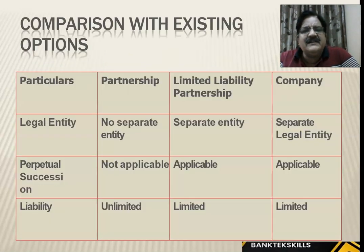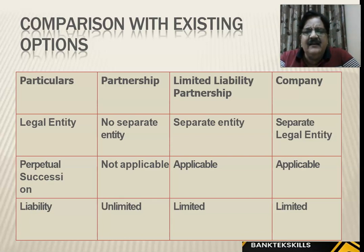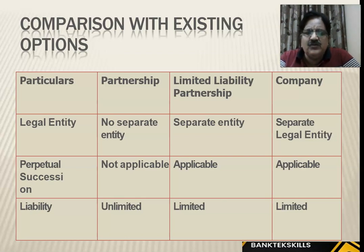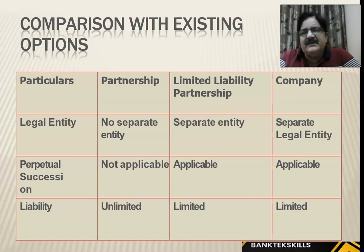Comparing with existing options: Partnership has no separate legal entity, LLP is a separate entity, and a company is also a separate entity. Perpetual succession is not applicable in partnership — when a partner dies, the account must be closed. But perpetual succession is available in LLP and companies. Liability is unlimited in partnership, but limited in LLP and companies.